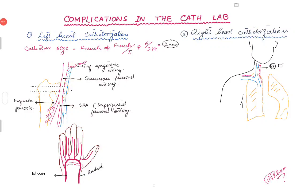Hello everybody, today we are going to talk about some of the complications — mainly the procedure complications. I labeled it as 'complications in the cath lab,' but since it is a procedure where we are accessing either the arteries or the veins, it can happen with anybody doing a procedure, whether in the ICU, the emergency room, putting a central line, arterial line, or triple lumen. I will mainly focus on the cath lab where we do left heart catheterization and right heart catheterization.